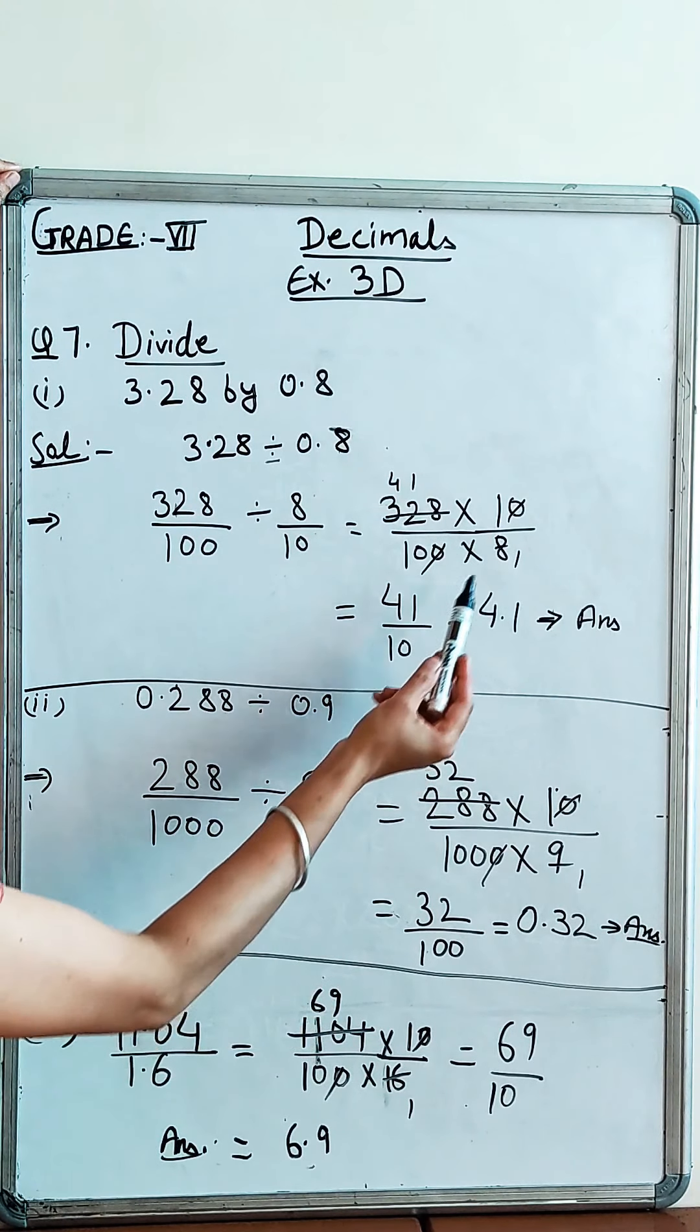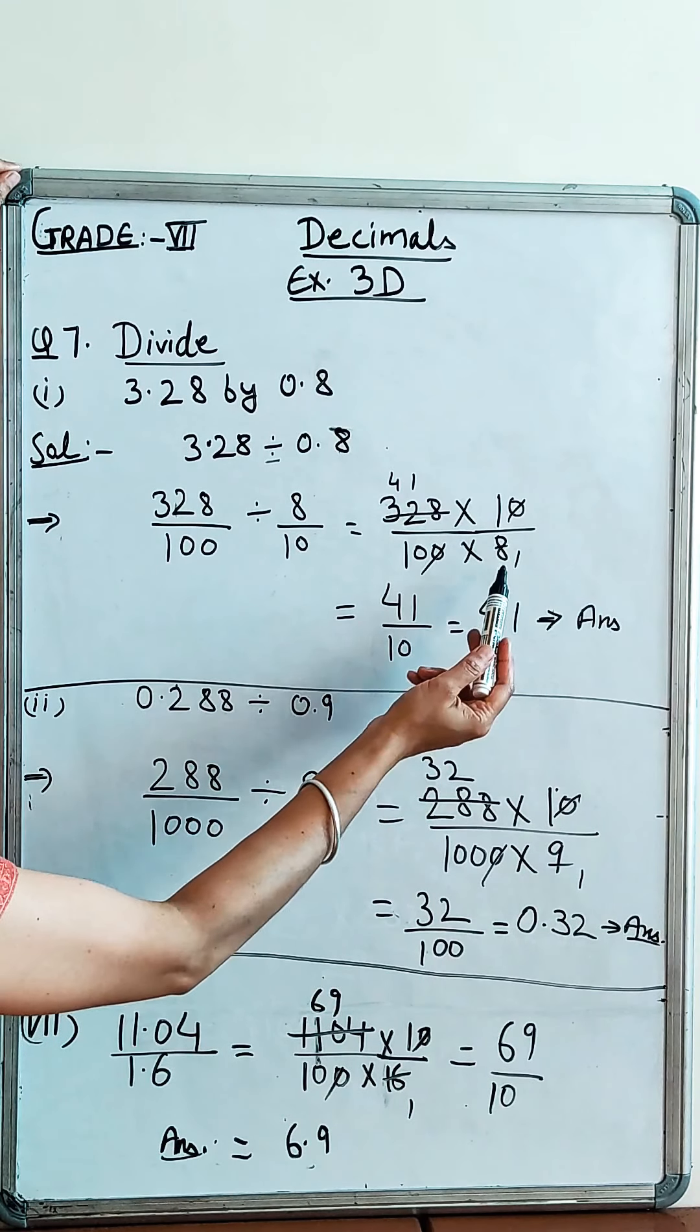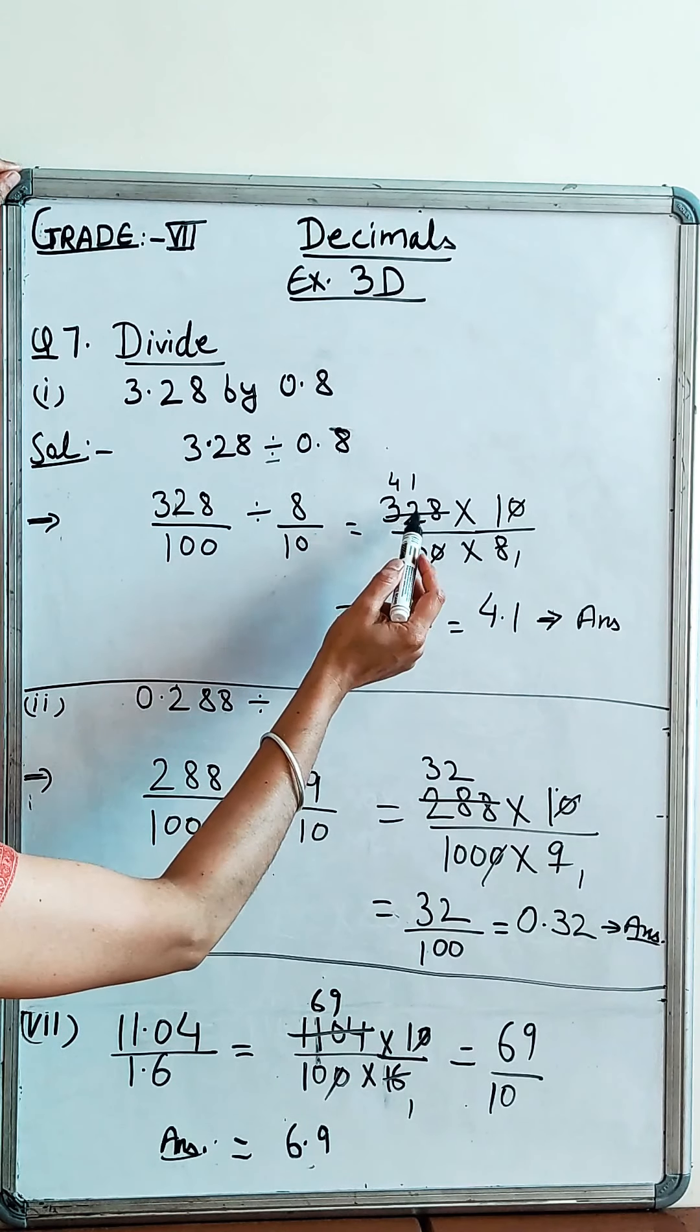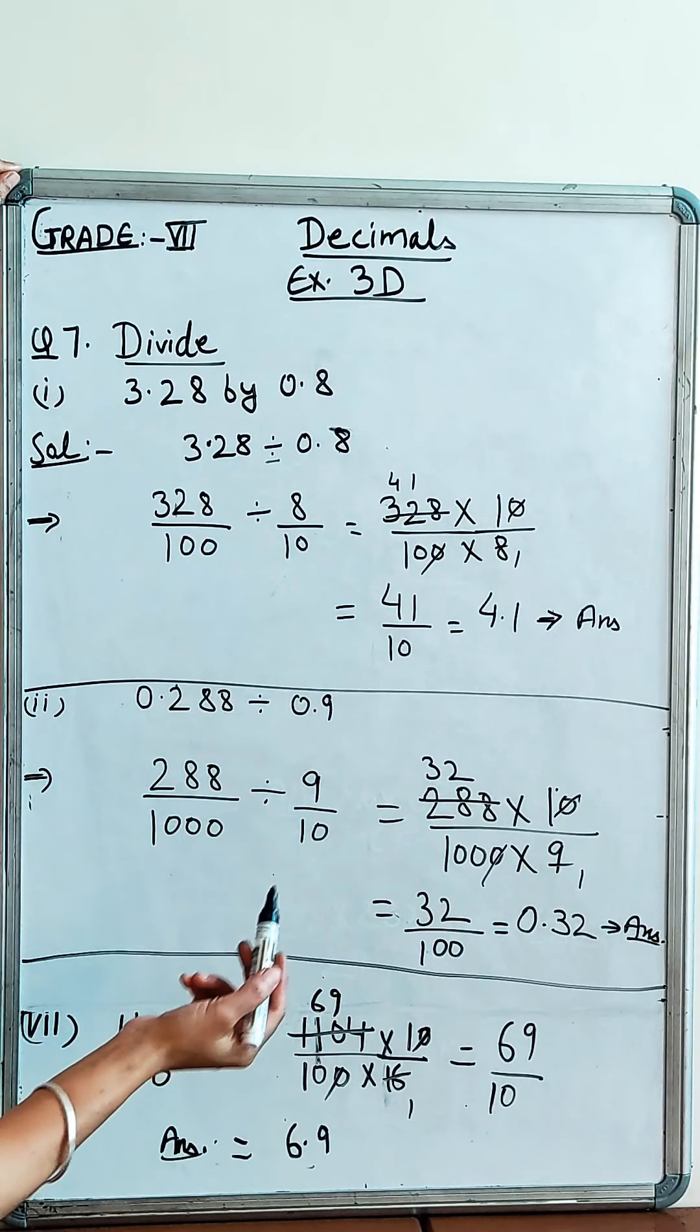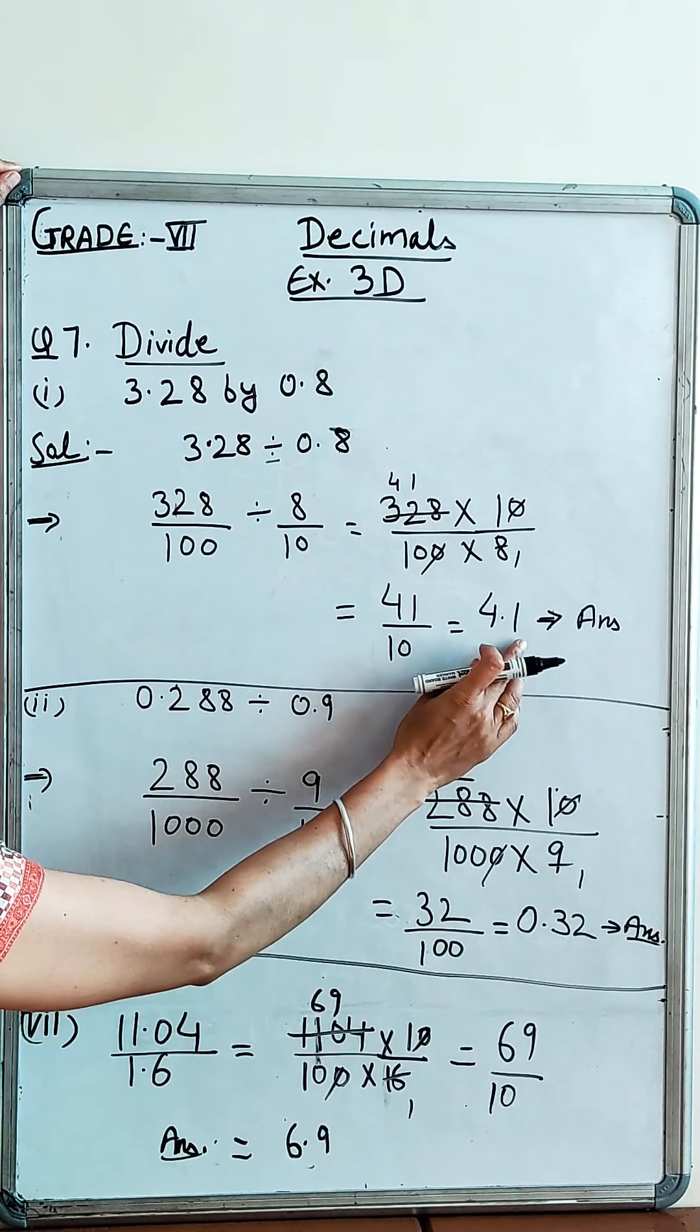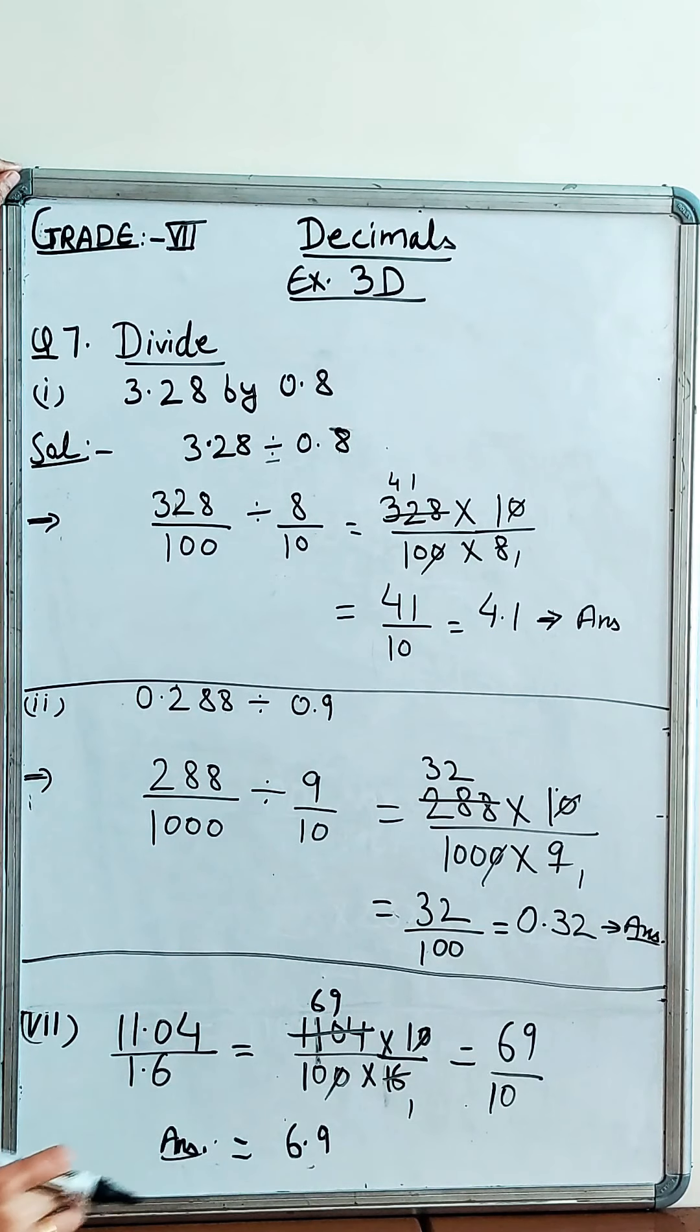After that, we have cut these 328 and 8 by 8. 8 ones are 8, 8 fours are 32, 8 ones are 8 again. So it is 41 over 10. We have written in decimal. The denominator is 10s. What is 4.1?